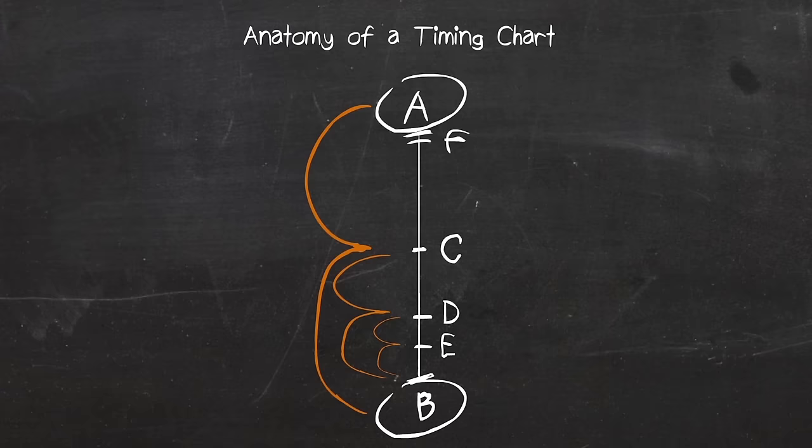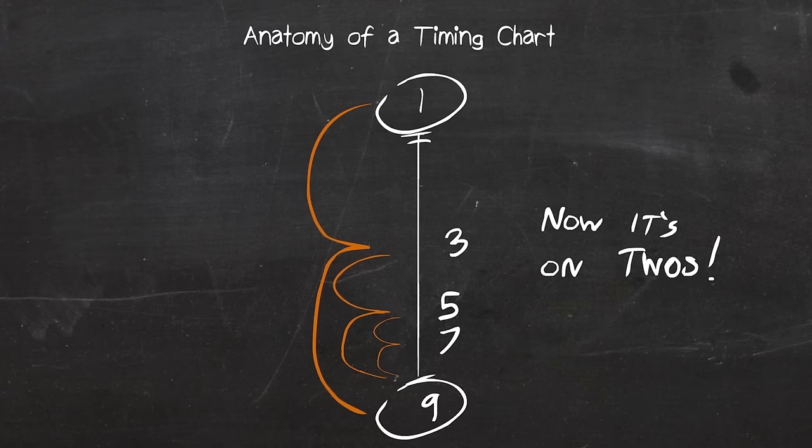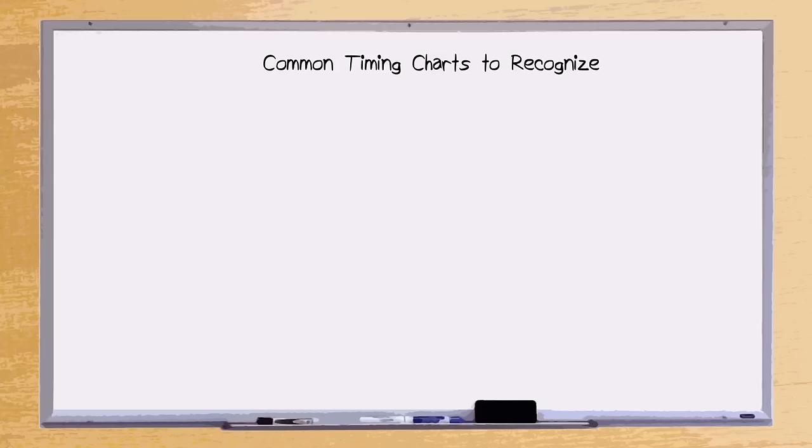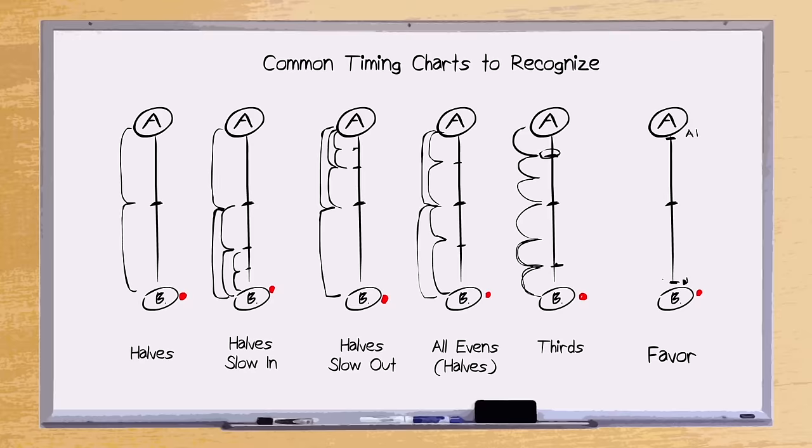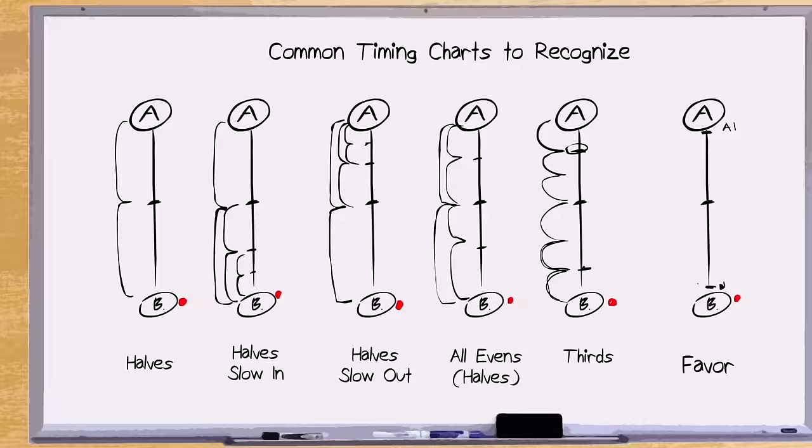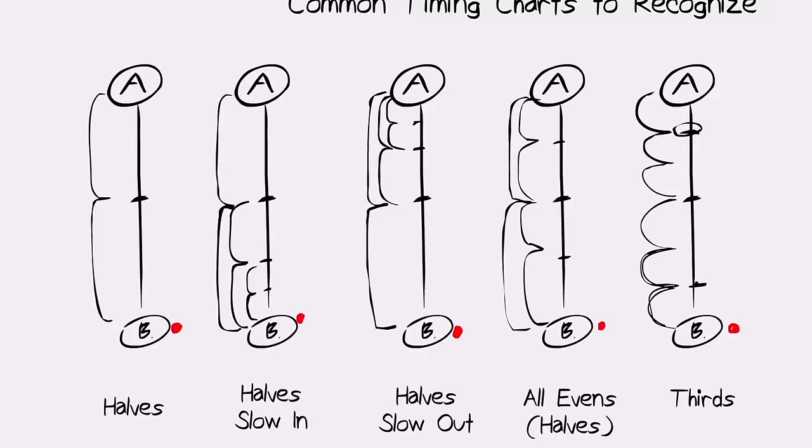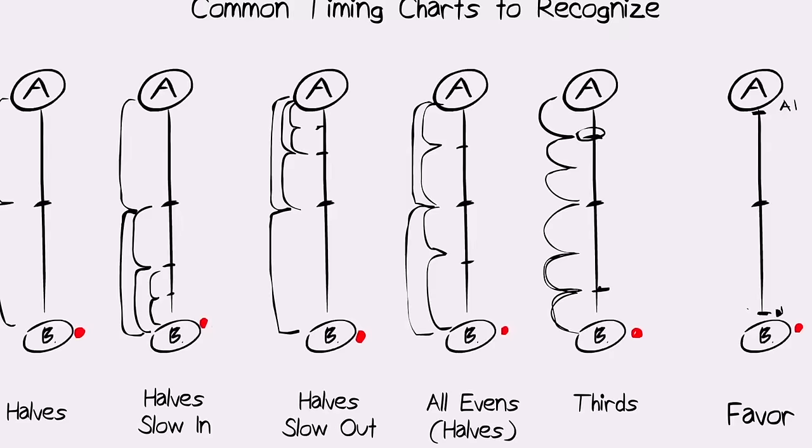Congrats! Now you understand the basic anatomy of a timing chart. Your graduation reward will be using frame numbers this time. Now that's what I call an animation timing chart. Let's talk about the common timing charts there are to recognize: halves, halves slow in, halves slow out, all evens and halves, thirds, and favoring. I added a little red dot to skim through each frame. Notice how the spacing of how the red dot moves is reflected on these charts. This is a symbolic reference to how the animation will move and how it'll be in between.